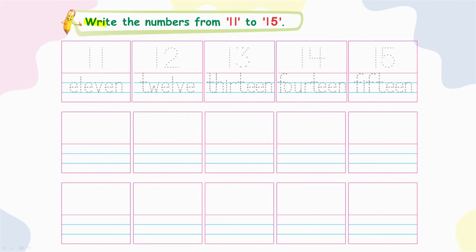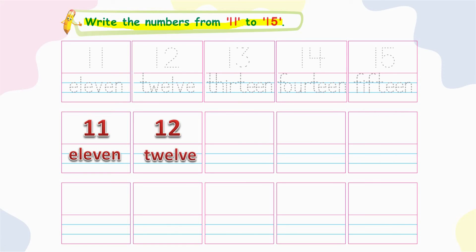Write the numbers from 11 to 15. Here you can write number 11: E-L-E-V-E-N, 11 in words. Next, 12: T-W-E-L-V-E, 12.